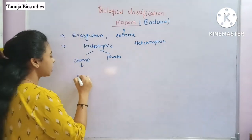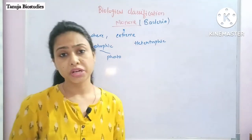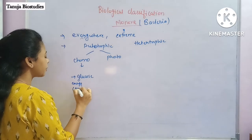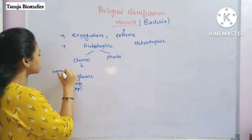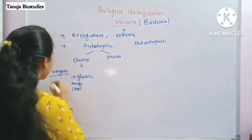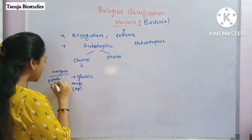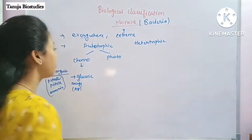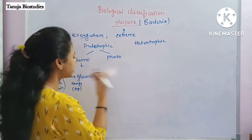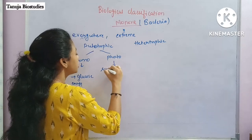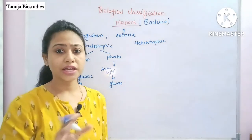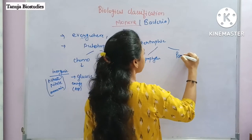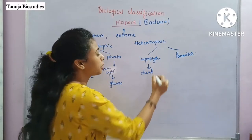Ultimately, chemo-autotrophs get energy from inorganic substances such as nitrate, nitrite, or ammonia, and use that energy to make glucose — that is why they are called chemo-autotrophs. If they use sunlight to make glucose, then they are called photo-autotrophs.